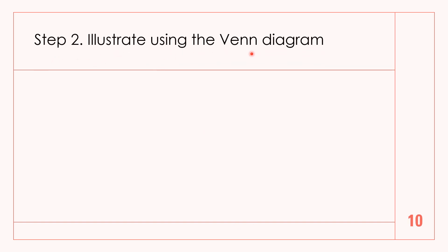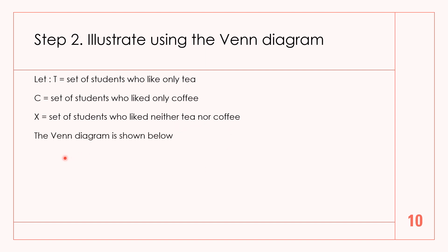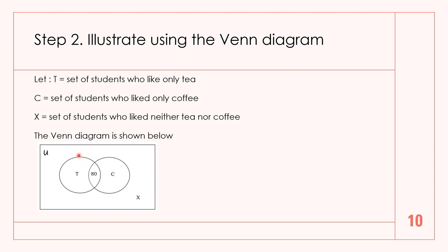Step 2: Illustrate using the Venn diagram. Let T be the set of students who like only tea, C the set of students who like only coffee, and X the set of students who like neither tea nor coffee. The Venn diagram shows students who like tea only on one side, students who like coffee only on the other, and 80 who like both tea and coffee in the middle.